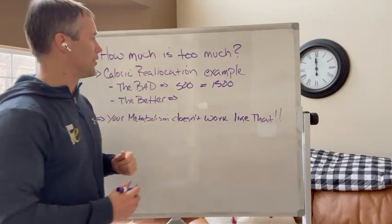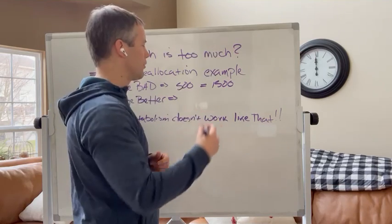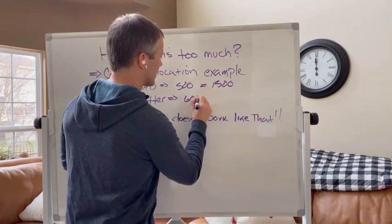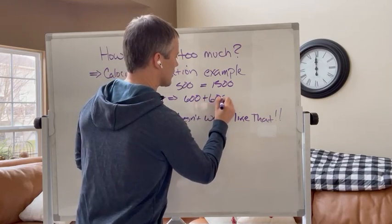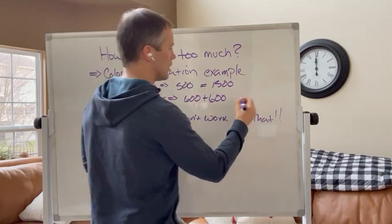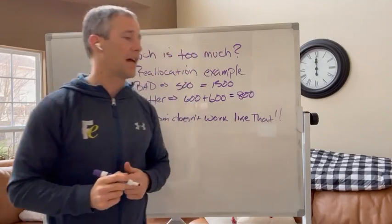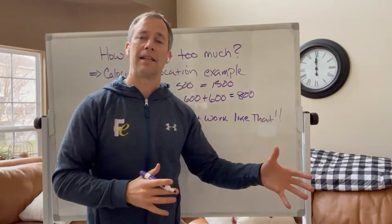A better way to do this, in my book, if I'm trying to stay around that 2,000 calories, is to do 600 plus 600 for breakfast and lunch, and that still allows a pretty good amount, 800 calories, for that dinner party in the evening.